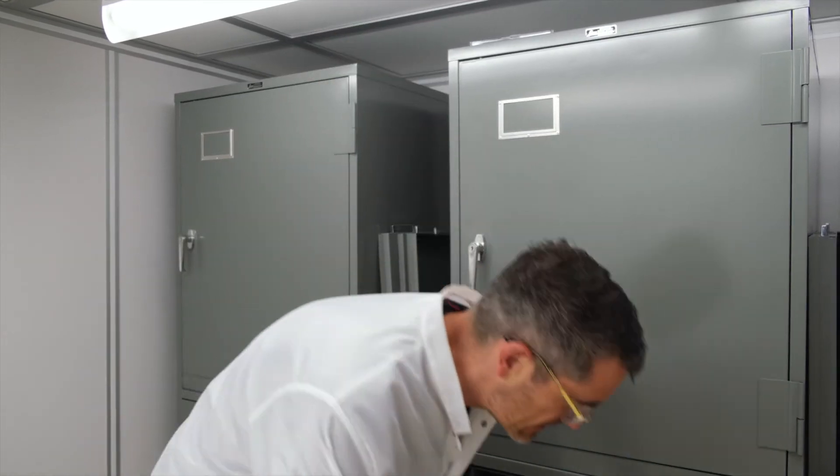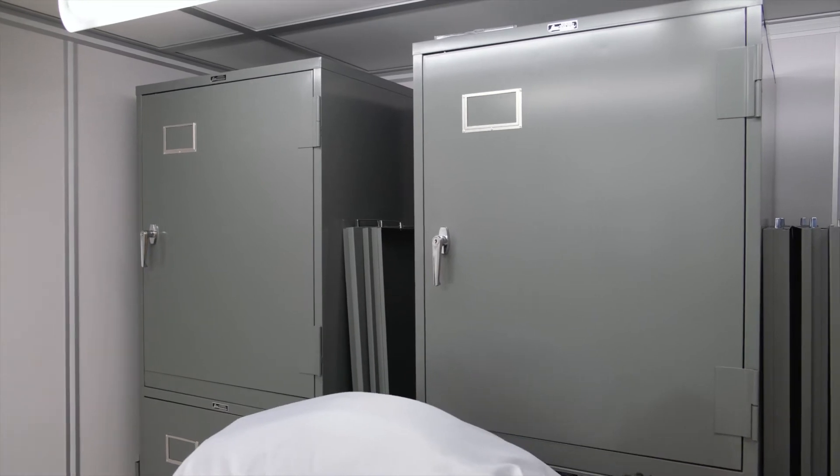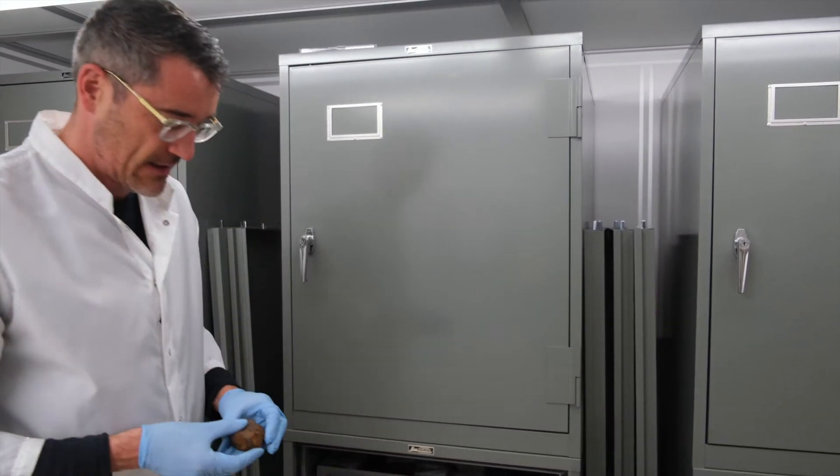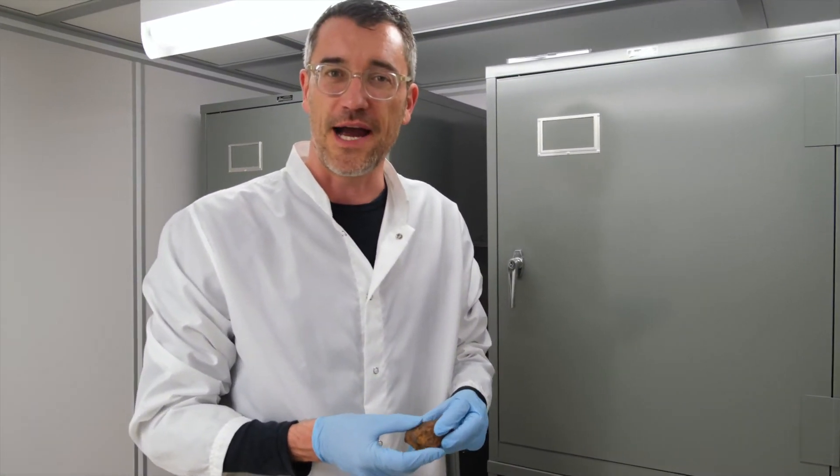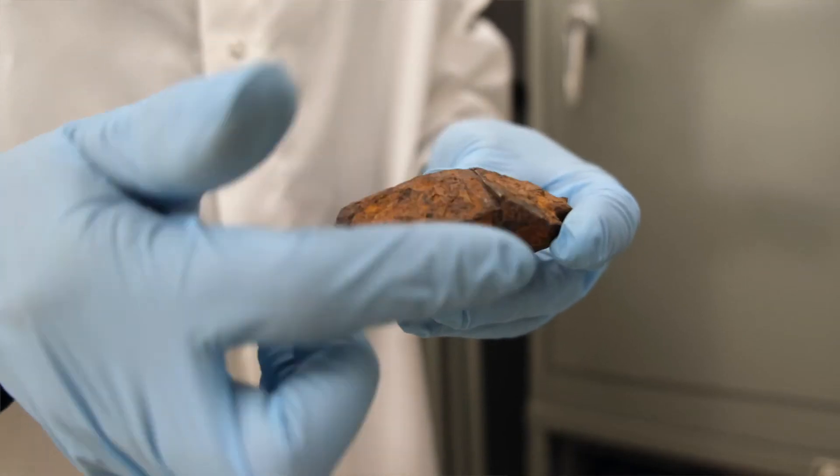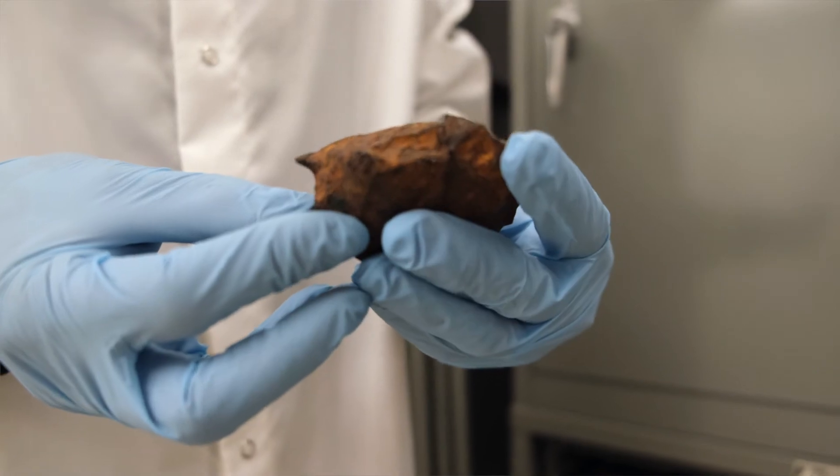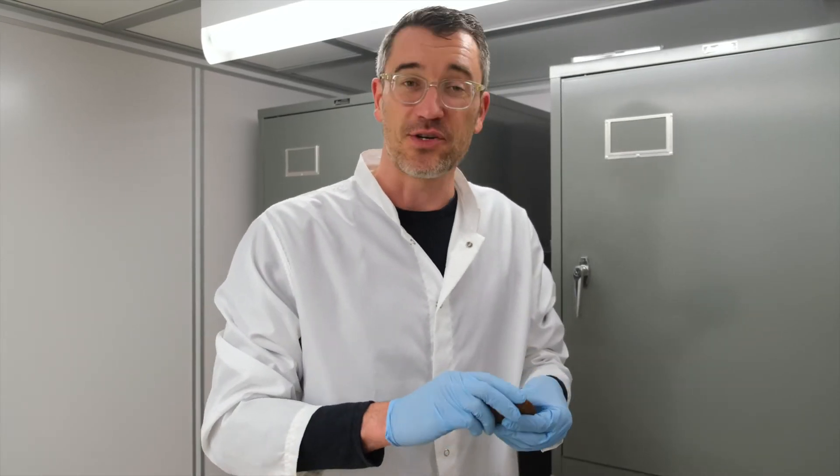Another example where meteorites have been found is Whitecourt. And in this particular case, it's unusual because the meteorites are found associated with an impact crater. These meteorites are slightly different from the other ones. They're iron-nickel meteorites. And the unusual thing about them is that instead of being rounded and sculpted by friction with the atmosphere, in this particular case, these are shrapnel.